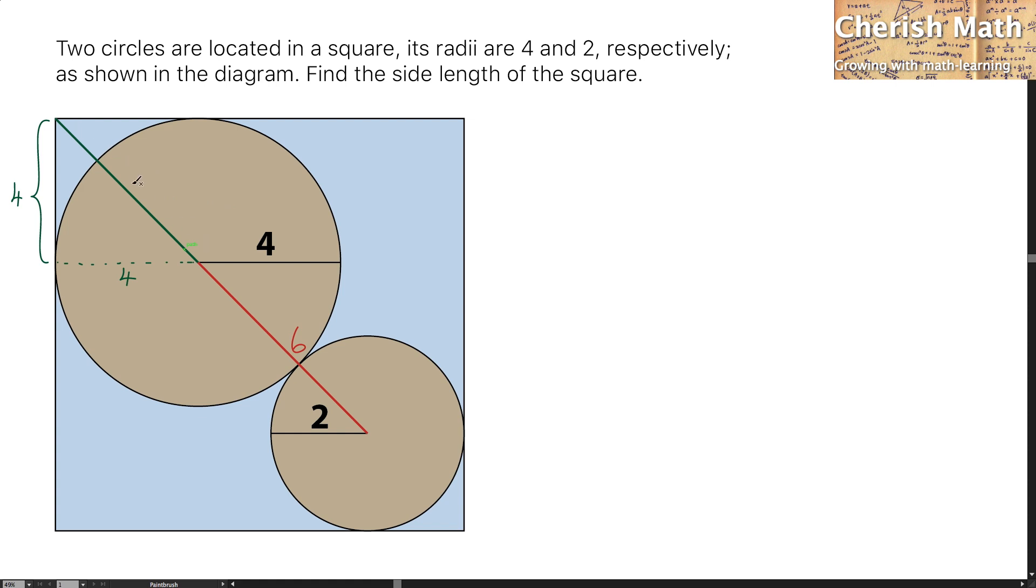To find the length of the green line, I use the Pythagorean theorem. 4 squared plus 4 squared, and the square root of the whole thing, I get square root of 32, and the answer is 4 times the square root of 2.